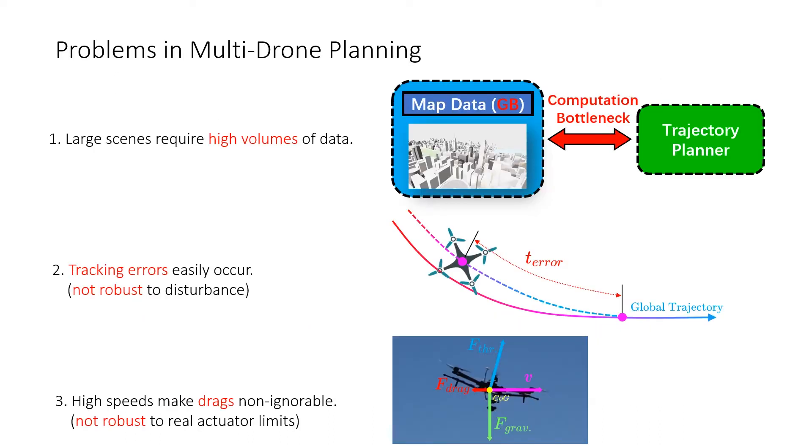There are three factors we concern about. Firstly, planning algorithms often need to access high volumes of map data frequently, which is the major computation bottleneck.